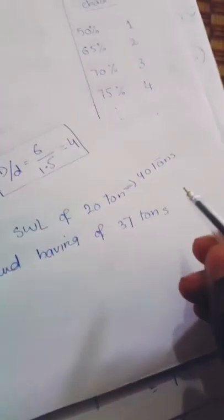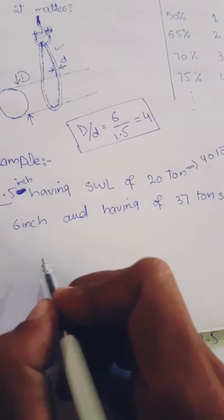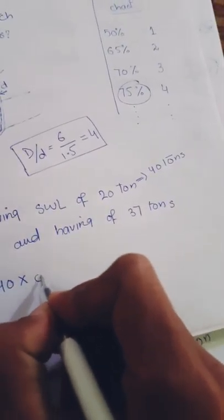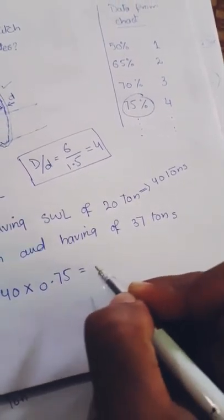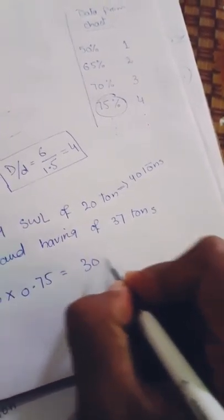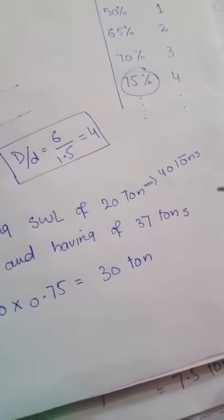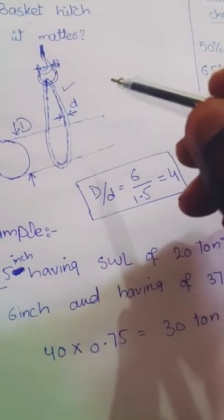So our total capacity for this sling is 40 tons, so we have to multiply 40 tons with 75%, which is 0.75, equals 30 tons. So we can lift about 30 tons with this sling.